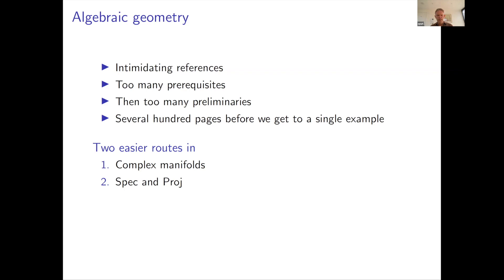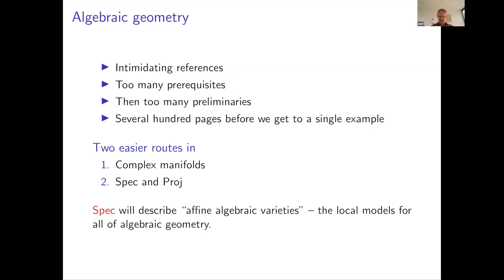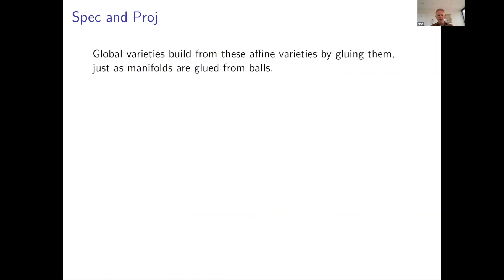And then we have two easier routes into the subject. One is through complex manifolds — a more differential geometry approach — and the other is the approach I'll take today, which is what we're calling spec and proj. So this is where everything is described in terms of just a single ring. Spec will describe affine algebraic varieties; these are the local models of all of algebraic geometry. And the global models, as you'll have seen, are built from these by gluing.